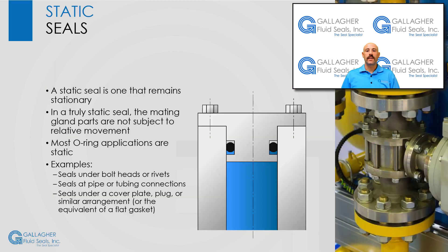An O-ring application is considered static if neither the O-ring nor the hardware are actively moving. Dynamic applications, such as linear reciprocating and rotary, will be reviewed next. In a truly static seal, the mating gland parts are not subject to relative movement except for small thermal expansion or separation by fluid pressure, as opposed to seals in which one of the gland parts has movement relative to the other. Most O-ring applications are static.